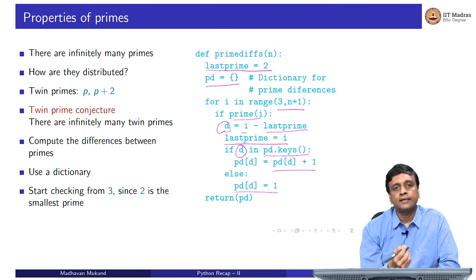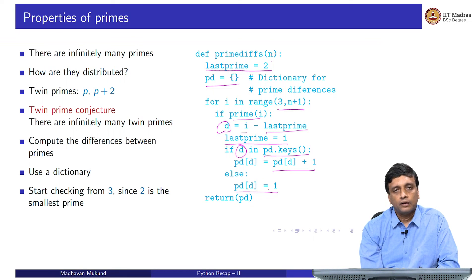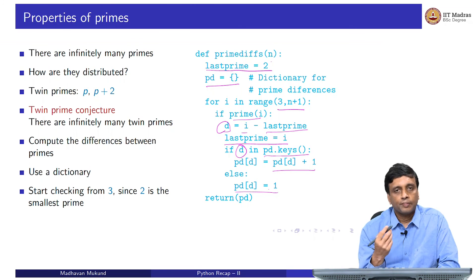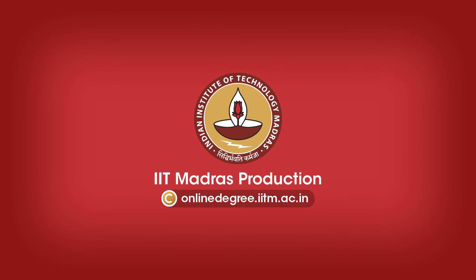These are all familiar patterns from computational thinking. This is an introduction to various concepts: we have seen for loops, while loops, and dictionaries in the context of computing prime numbers.